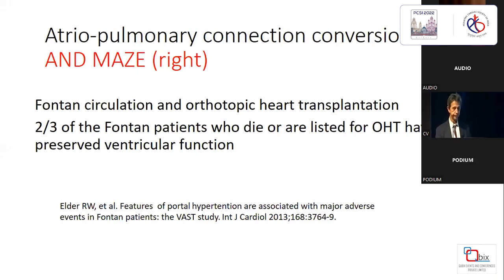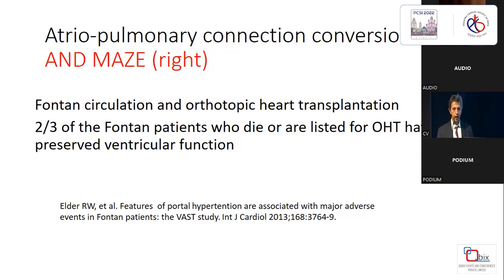More importantly, the atrial-pulmonary connection conversion to the extracardiac conduit associated with a maze and often with natural pacing. I quote this publication — Fontan Circulation and Orthotopic Heart Transplantation — which states that two-thirds of Fontan patients who die or are listed for orthotopic heart transplantation have preserved ventricular function, meaning two-thirds have a defect in their Fontan circuit that is potentially correctable, including valve regurgitation.